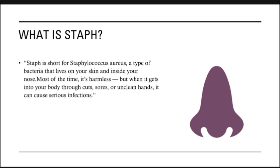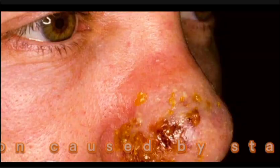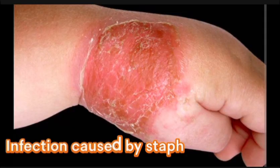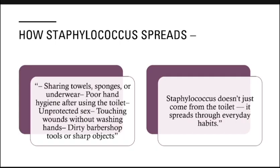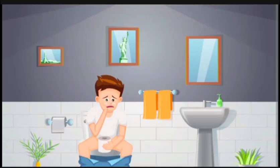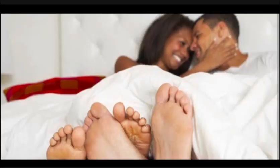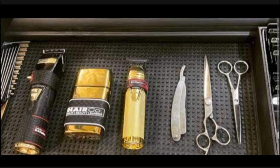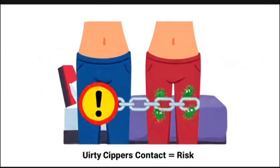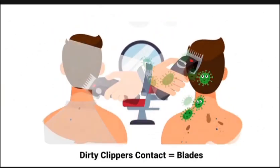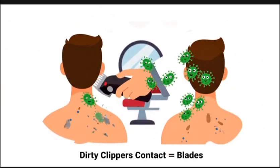How staff spreads: poor hand hygiene after using the toilet, unprotected sex, touching wounds without washing hands, and dirty barbershop tools or sharp objects. Staff doesn't just come from the toilet — it spreads through everyday habits.